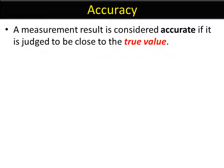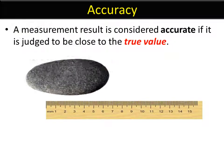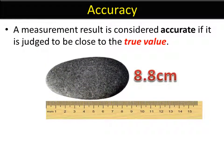So an accurate measurement is one that's close to the true value, what it actually is. So if you measure something, let's say we're measuring a pebble, and the length of the pebble you measure is 8.8 centimeters.